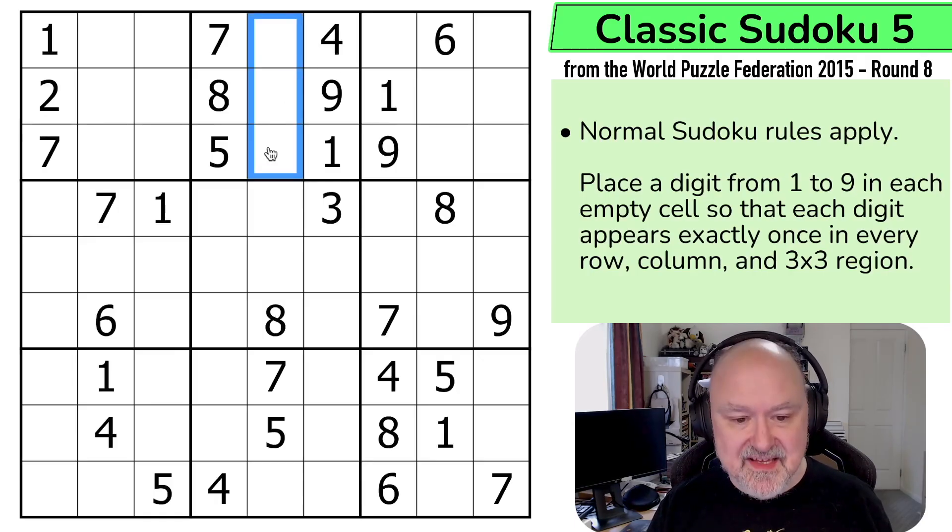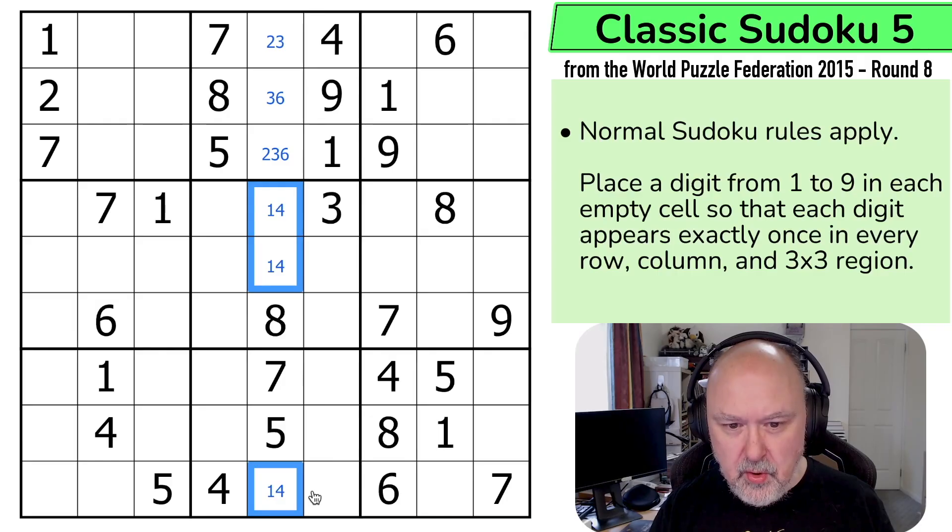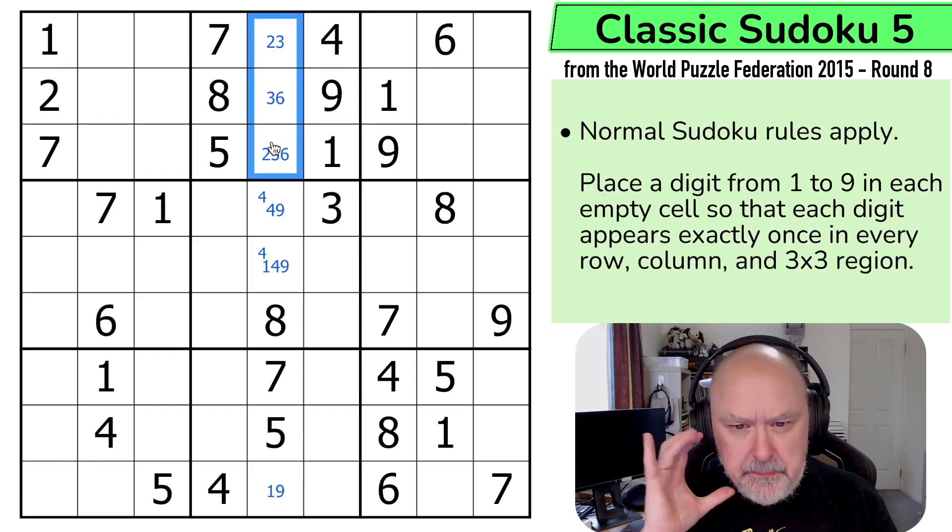Well, immediately this is screaming at me, because this is going to be a triple. I haven't put a 2, 3, or 6 into this box. So 2, 3, 6 must go in here. Now this can't be a 6, and this can't be a 2, but it means none of these digits can be 2, 3, or 6. So this is another triple: 1, 4, 9.